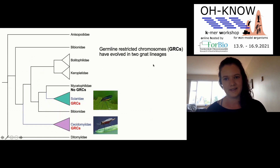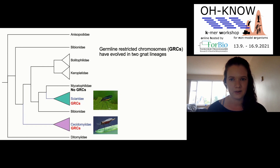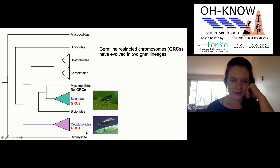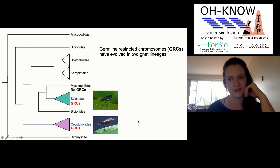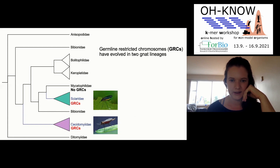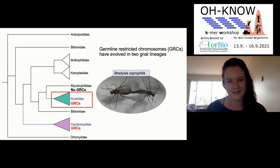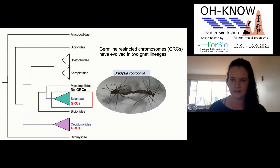This is especially true in flies. There are actually three different fly families that have germline-restricted chromosomes. Two of these — the Sciaridae and the Cecidomyiidae — are fairly closely related to each other; they're both gnats. Although these two families are in the same clade, they're not sister clades, so there's uncertainty about whether the germline-restricted chromosomes share a common origin or evolved independently. I was focused on looking at the evolution of GRCs in the Sciaridae species Bradysia coprophila.